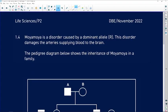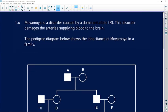Question 1.4 starts with: Moyamoya is a disorder caused by a dominant allele. You start panicking because you think I have never heard of this in my life before. It doesn't matter if you've never heard of it before.